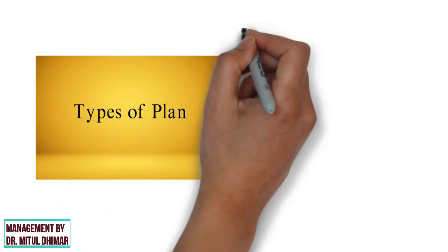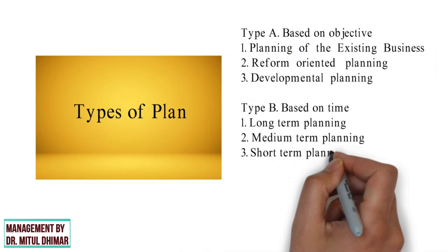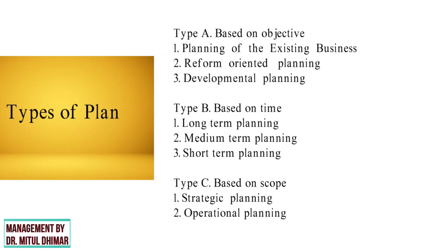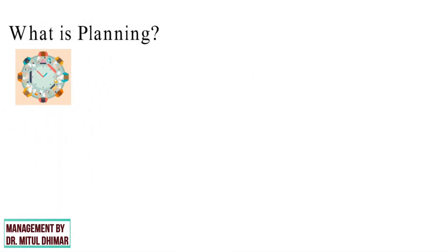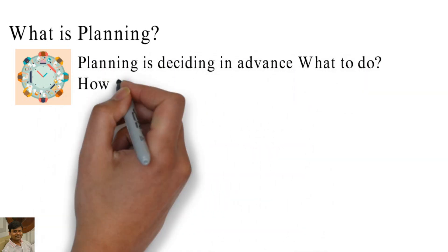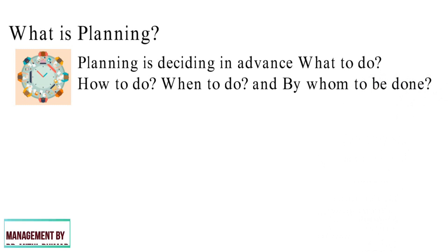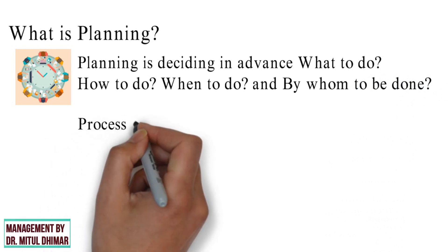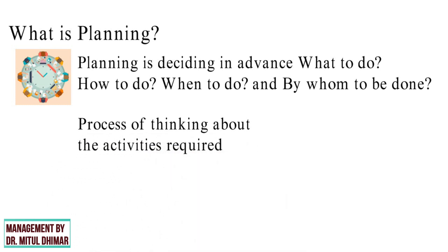Hello friends. Today we are going to study types of plan in detail, with different examples in each point. First of all, let us understand the meaning of planning. According to Koons and O'Donnell, planning is deciding in advance what to do, how to do, when to do, and by whom to be done. In short, planning is the process of thinking about the activities required to achieve a desired goal.